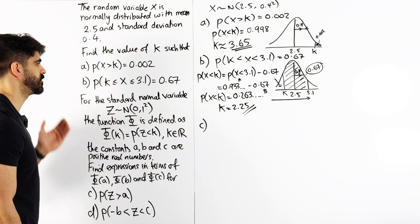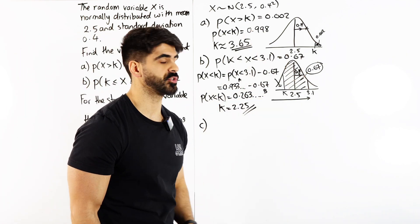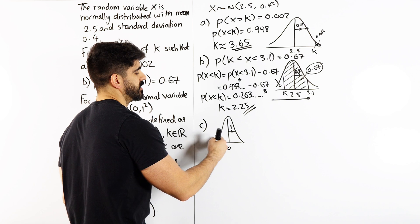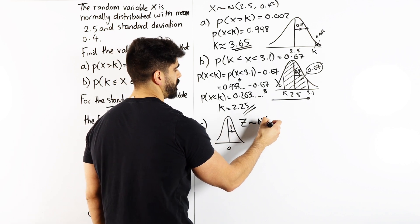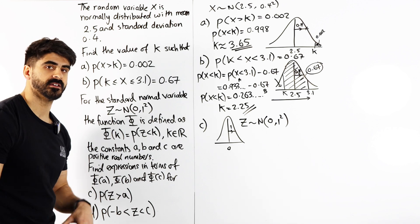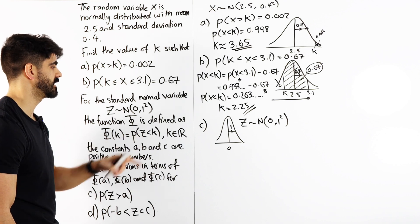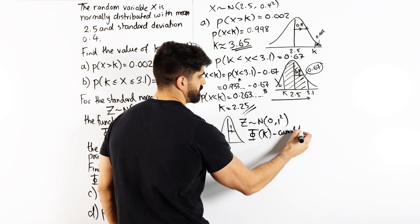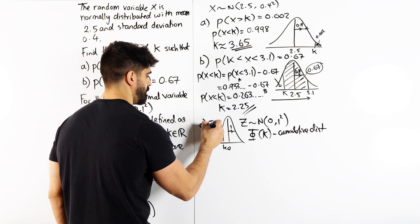Now here is what students neglect or don't get taught. For the standard normal variable, the standard normal distribution has a mean of 0 and standard deviation of 1 — it's basically the number line: 0, 1, 2, 3, 4, etc. The normal variable is z. We have this function phi: phi of k is defined as the probability that z is less than k — it's the cumulative distribution. That area up to k is phi of k.